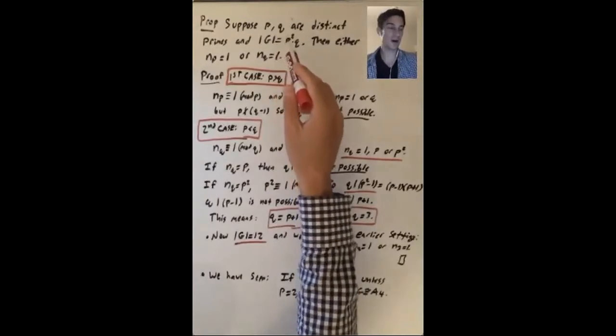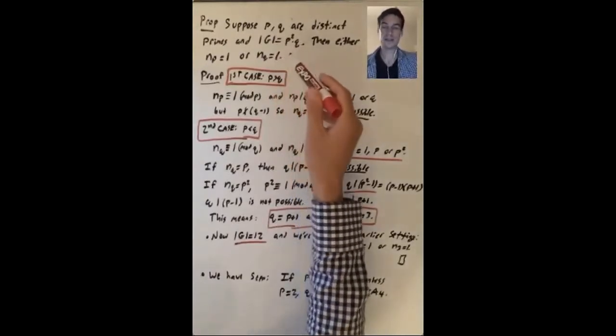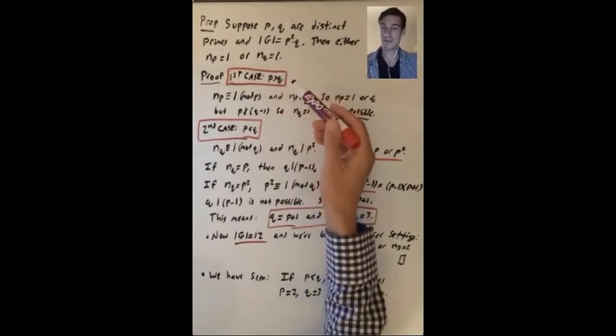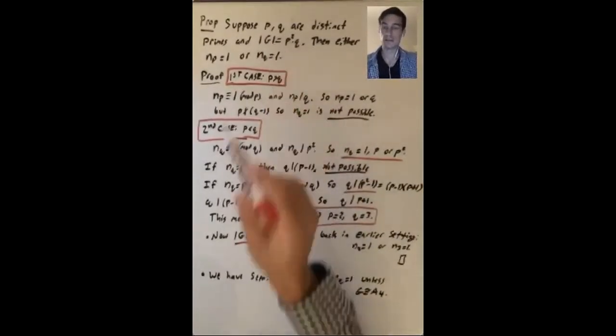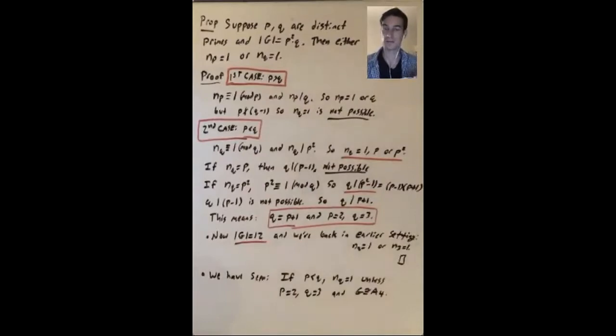Just to say where we are, p squared q - we've been thinking about this case quite a bit. If p equals 2 and q equals 3, this is 12. We've talked about groups of order 12 already.